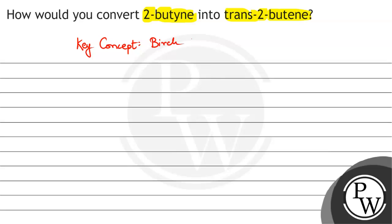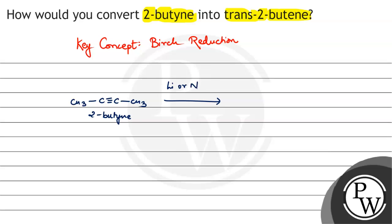Birch reduction is an important reduction in the study of organic chemistry. So we take 2-butyne, and we take the reagent lithium, or sodium, in the presence of liquid NH3. This is basically Birch reduction. So what does this give us? This directly becomes trans-2-butene.